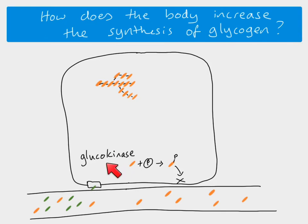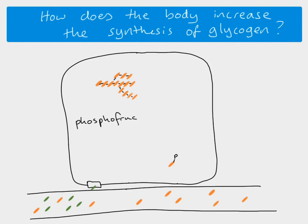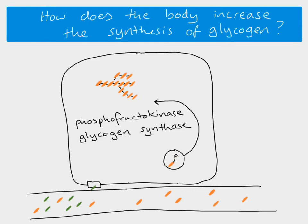Insulin also activates two other molecules: phosphofructokinase and glycogen synthase. These two enzymes take the phosphorylated glucose and, through further modification, add the glucose onto the glycogen molecule. Once activated by insulin binding to the cell, these enzymes increase the process of glycogenesis. Together, all of these mechanisms explain how insulin causes blood glucose concentration to decrease.